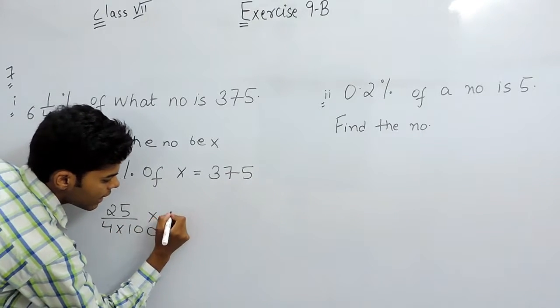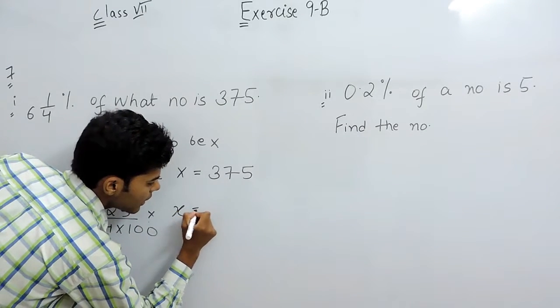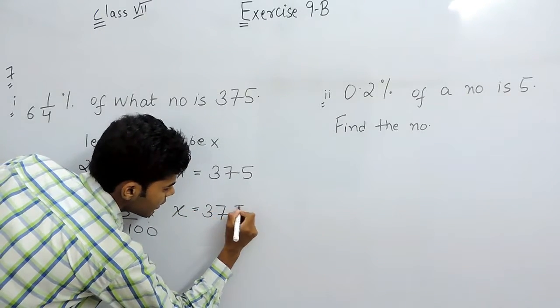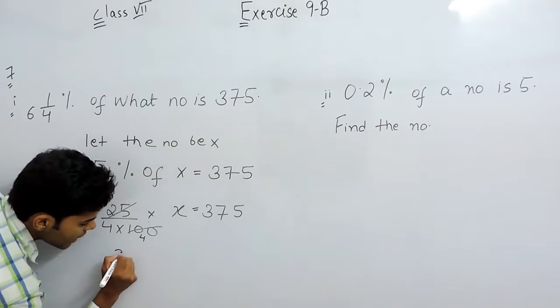We will multiply it with x and that will give us 375. So 25/4 times, so x will be equal to 375 multiplied with 16.